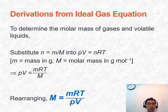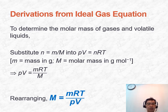Playing around with the ideal gas equation PV = nRT: since n equals mass divided by molar mass, rearranging gives molar mass = (mass × R × T) / (P × V).